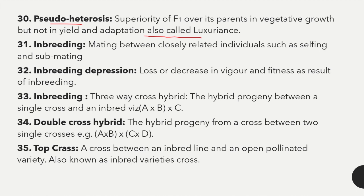Inbreeding is the mating between closely related individuals such as selfing and sib-mating. Inbreeding depression is the loss or decrease in vigour and fitness as a result of inbreeding. Double cross hybrid is the hybrid progeny from a cross between two single crosses, for example a cross between A×B and C×D. Top cross is a cross between an inbred line and an open pollinated variety.